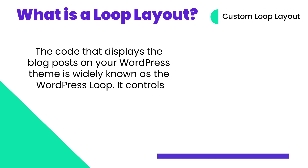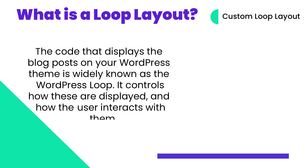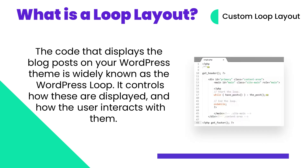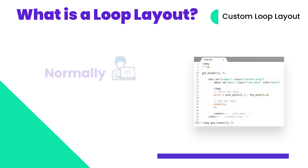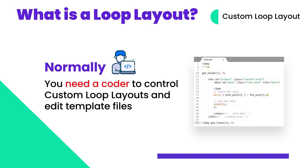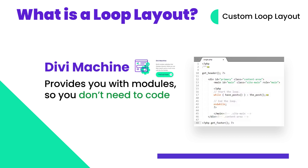It controls how these things are displayed on the screen and how the user interacts with them. If you look at the right side of the image on screen, you'll see an example of this code. Normally, you would need to be a coder to control the custom loop and edit the template files of your theme. But Divi Machine makes that super easy by providing you with a bunch of modules so you don't even need to touch the code to make beautiful sites. And that's what we're doing in this course.